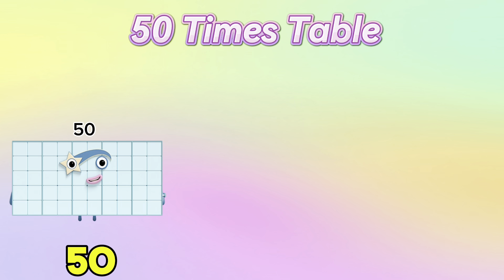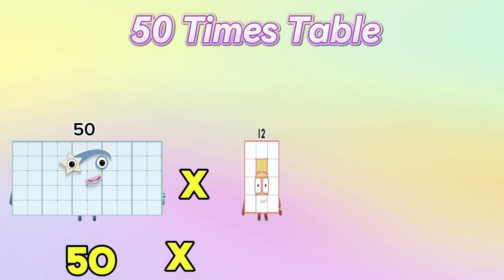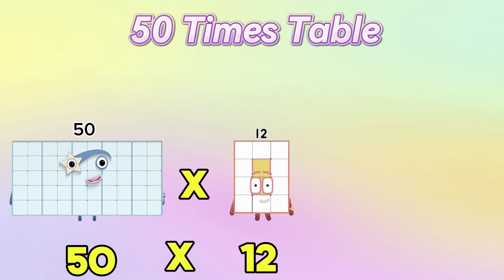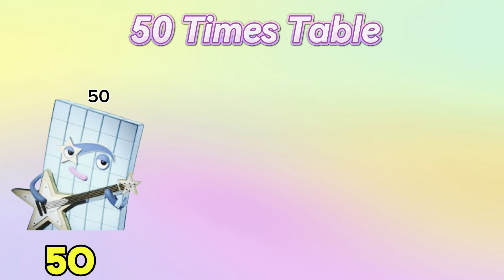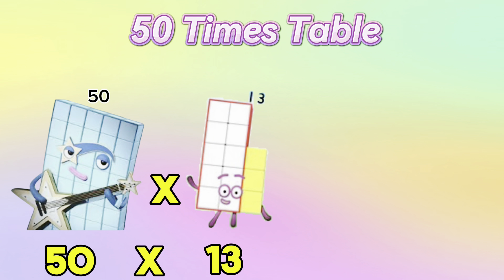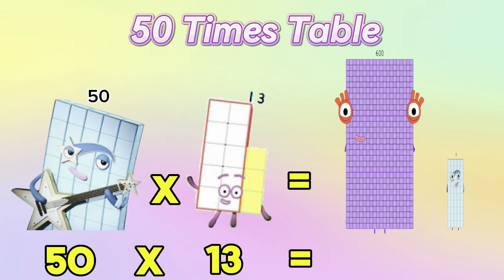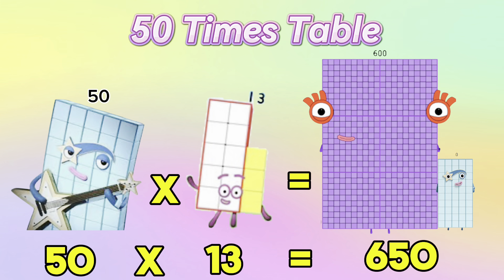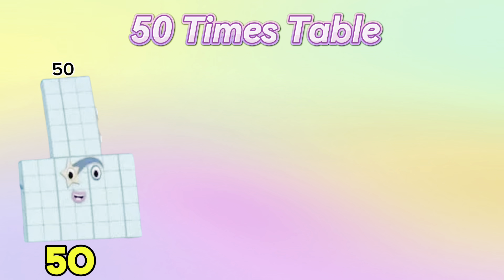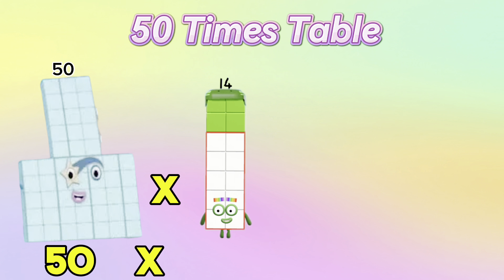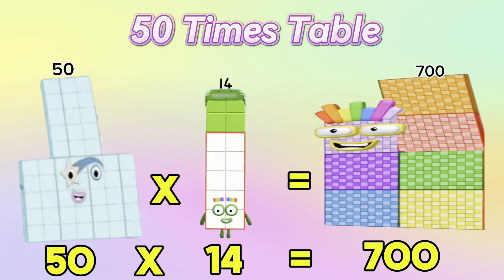50 multiplied by 12 is equal to 600. 50 multiplied by 14 is equal to 700.